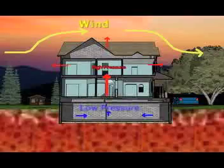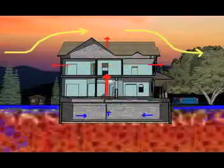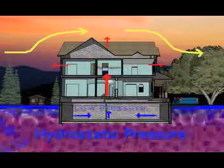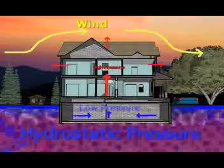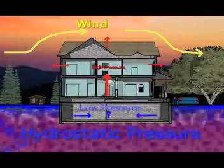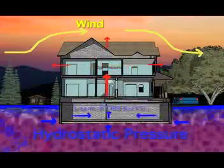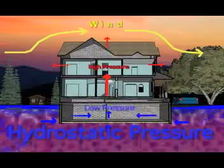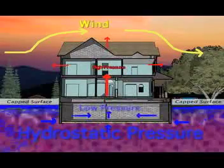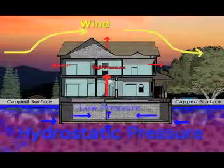The bottom half experiences hydrostatic pressure. As it rains, the water seeps into the ground and displaces the air in the soil. This air can be driven into the basement or crawlspace of a home. The problem can be made worse if snow, ice, or asphalt are present, as the air has no way to make it to the surface other than through the home.